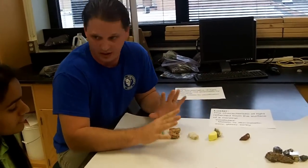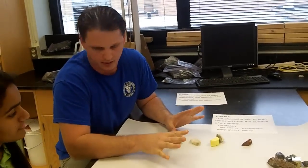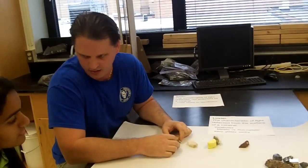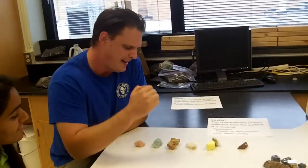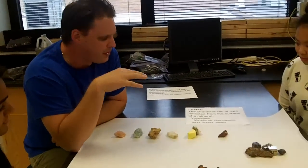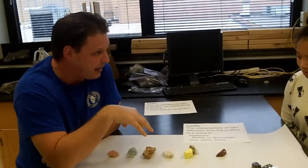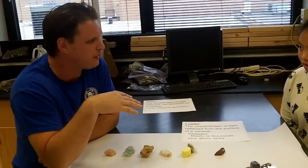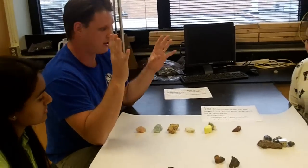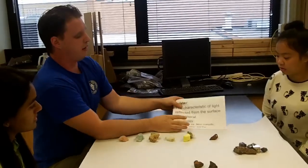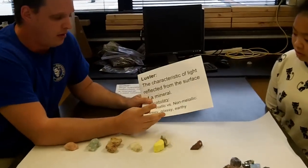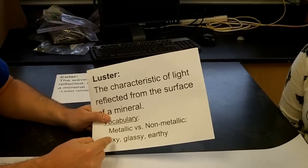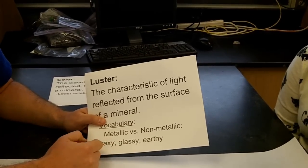Now if we thought this was really easy, there's another layer — it's going to get more involved, but not complicated. I'm going to further subdivide non-metallic by how it reflects light, using these special terms: glassy, waxy, and earthy.